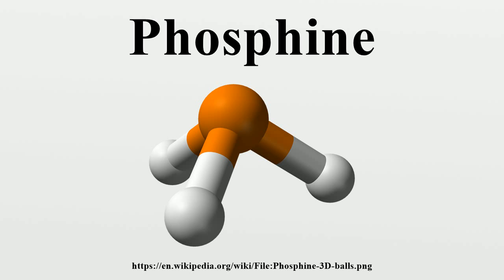The name phosphine first appeared in combined form in 1857, and the gas PH3 was named phosphine by 1865. Structure and Properties: PH3 is a trigonal pyramidal molecule with C3v molecular symmetry. The length of the P-H bond is 1.42 Å, and the H-P-H bond angles are 93.5 degrees. The dipole moment is 0.58 D, which increases with substitution of methyl groups in the series.